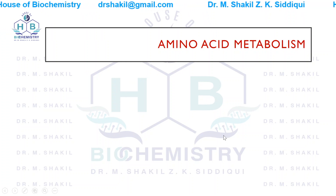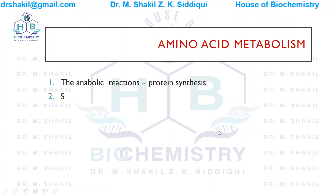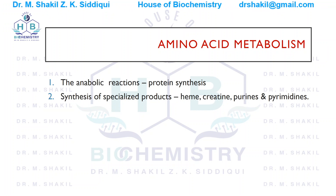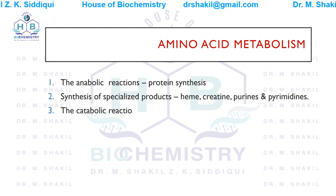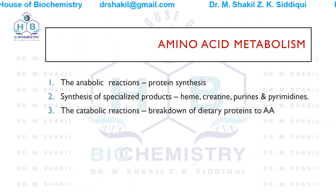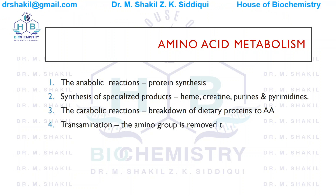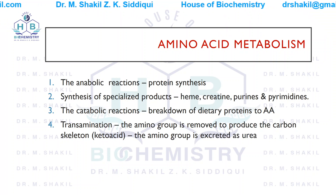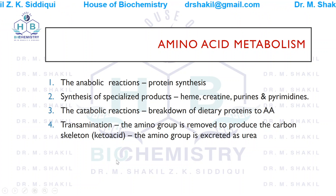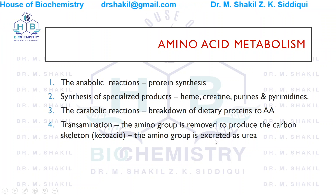Amino acids can be used for anabolic reactions involving the synthesis of proteins, and for synthesis of specialized products like heme, creatine, purines and pyrimidines. They are also involved in catabolic reactions, where dietary proteins are broken down to amino acids. They are involved in transamination reactions, in which the amino group is removed to produce a carbon skeleton (keto acid), which is later deaminated and excreted as urea.